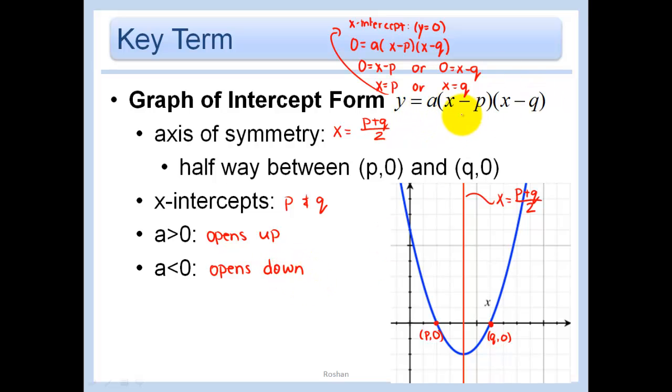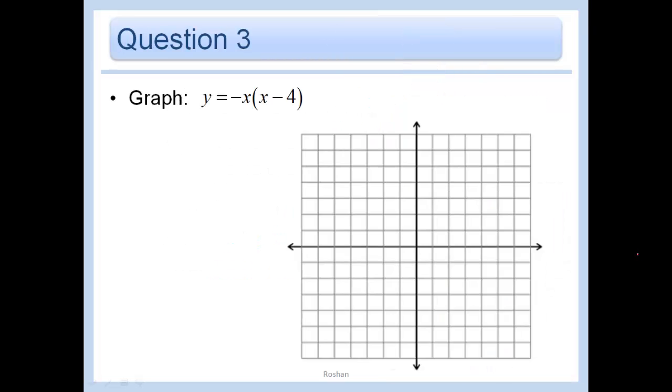So in this form, I have my x-intercepts sitting there. In this one, I could rewrite this as negative x minus 0 times x minus 4. My x-intercepts are just let this be 0 or let this be 0. So let the x be equal to 0 or let this x minus 4 be equal to 0, in which case I get x equals 4. These are my x-intercepts. That means that one point is 0, 0, and the other point is 4, 0.